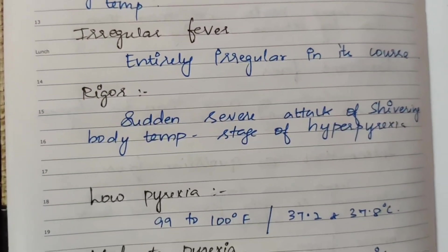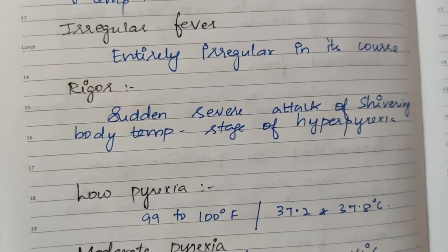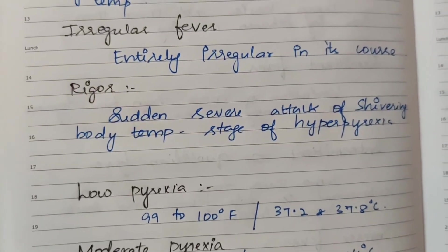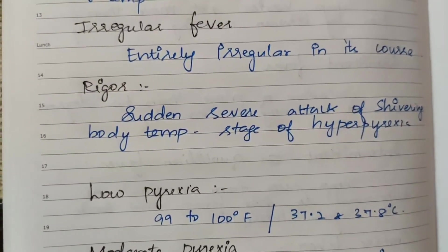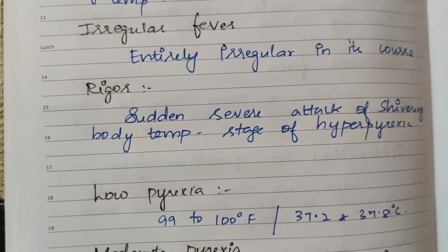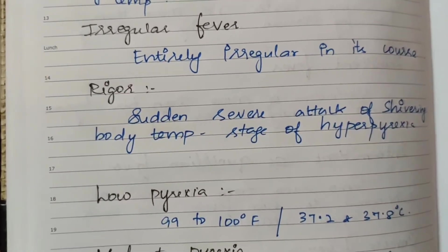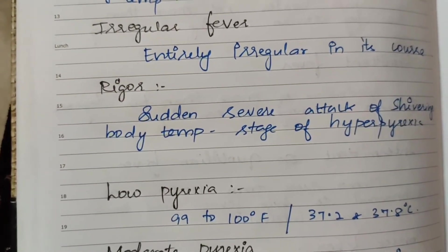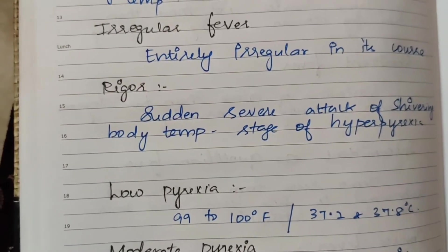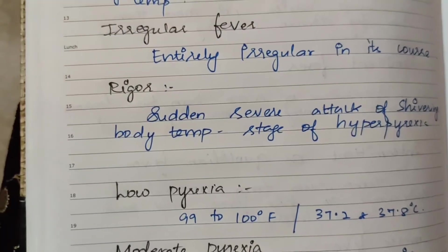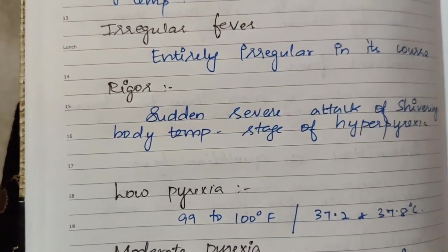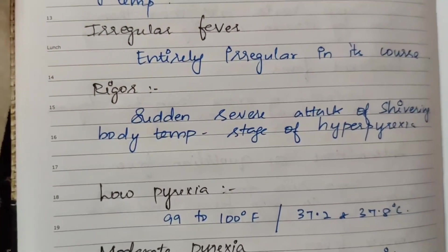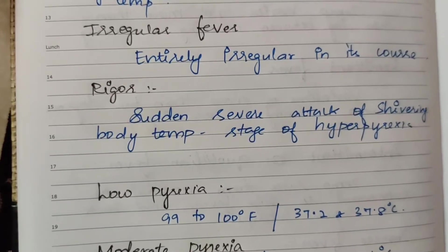Hyperpyrexia involves a sudden attack of rigors or shivering. This is seen mostly in malaria.